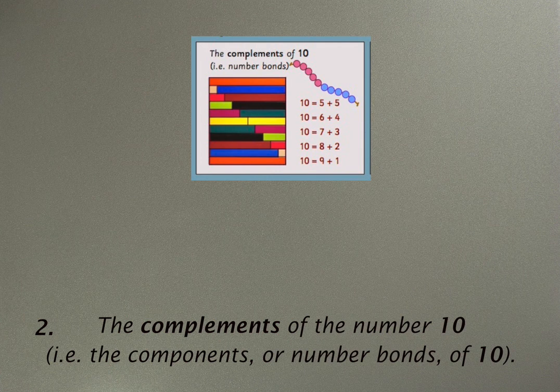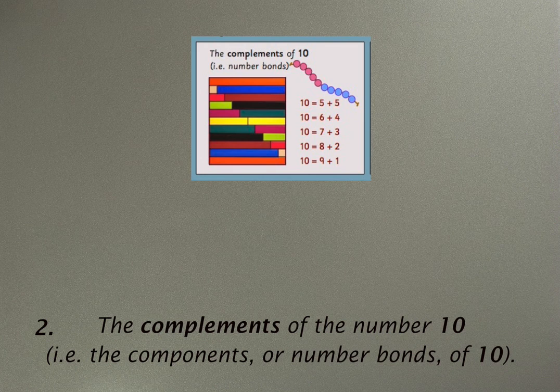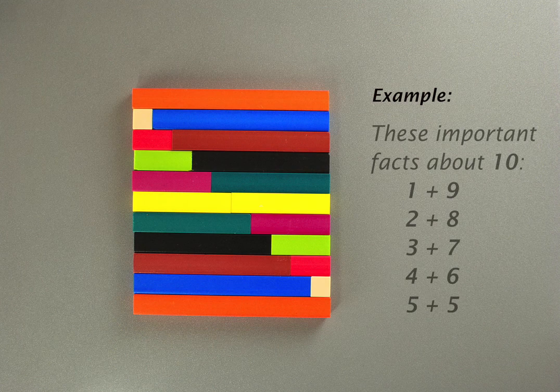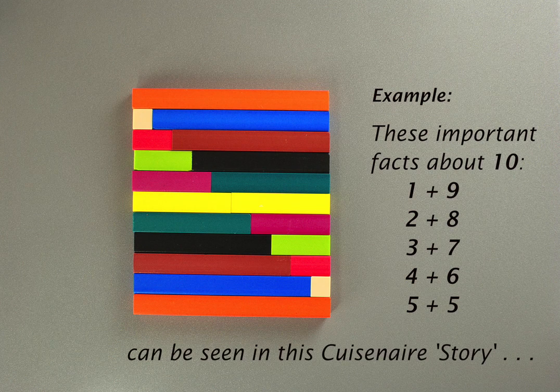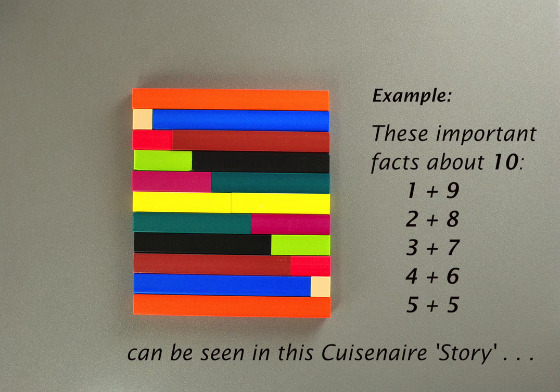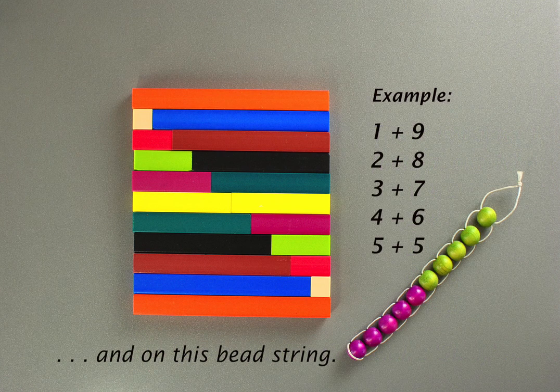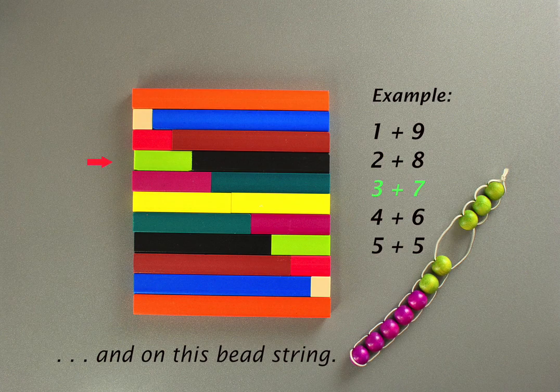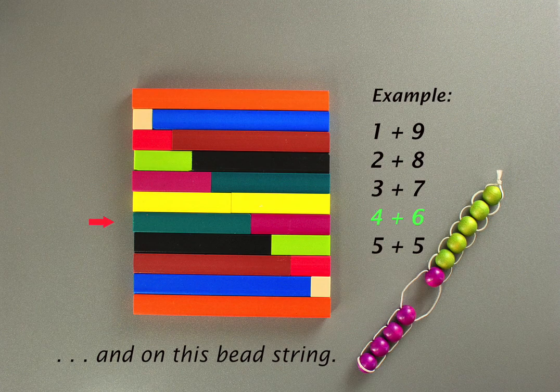Let's move on to another pre-skill, the complements of the number ten, and by that I mean the components, or the number bonds of the number ten. Here's my example. These are the important facts about ten, these five facts, which can be seen very clearly in a story of ten, and they can also be seen by moving beads one at a time on a bead string.